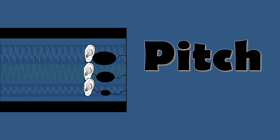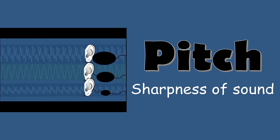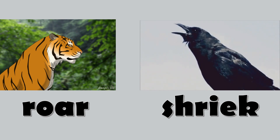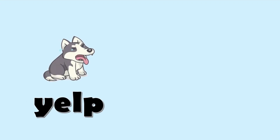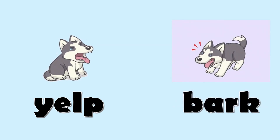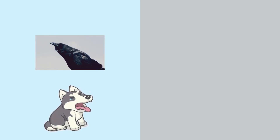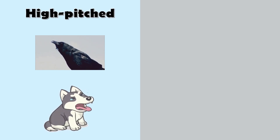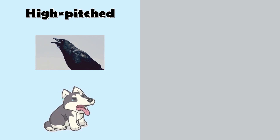First, we have the pitch. It refers to the sharpness of sound. Have you ever noticed that the sound made when a crow shrieks or an alarm is sharper than the sound made when a tiger whispers? The sound made when a dog yelps is also sharper and more piercing than the sound made when it whispers. Sounds which are sharp and piercing like a crow's shriek and the dog's yelp are said to have a high pitch. High pitch sounds are produced when the object making the sound vibrates very fast.